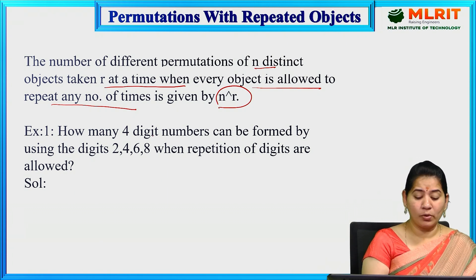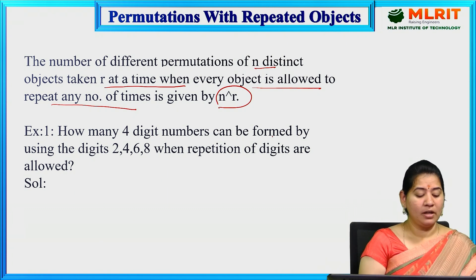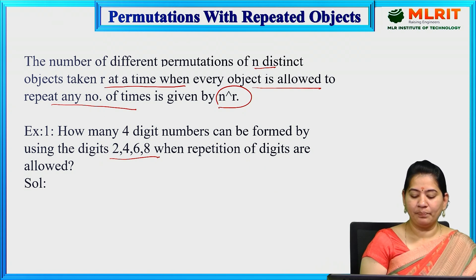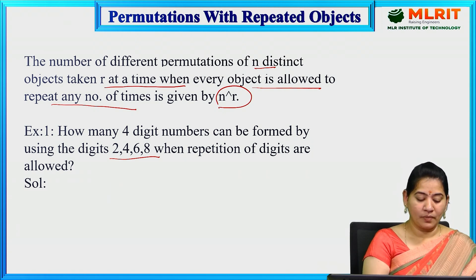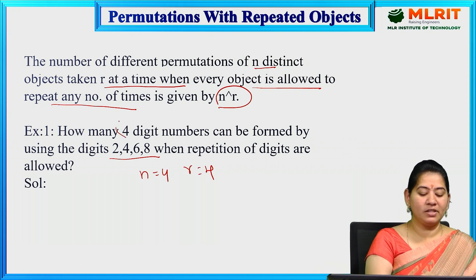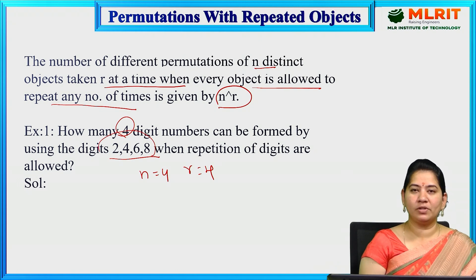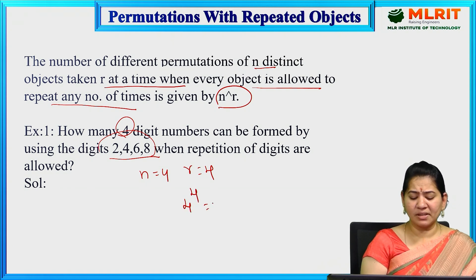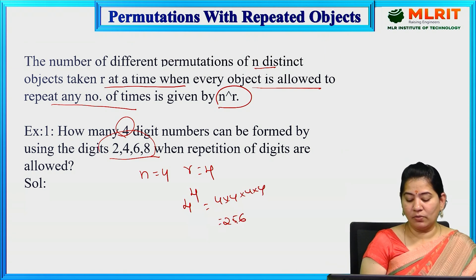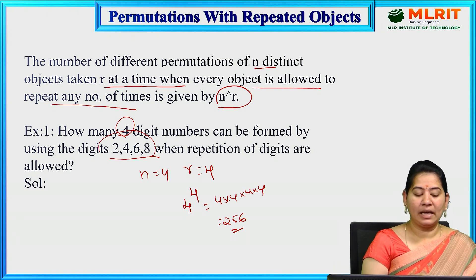How many four-digit numbers can be formed by using the digits 2, 4, 6, 8 when repetition of digits is allowed? Here n is equal to 4 and r is equal to 4, because we want 4-digit numbers and we have 4 digits. The answer is 4 power 4, which is 4 × 4 × 4 × 4 = 256.